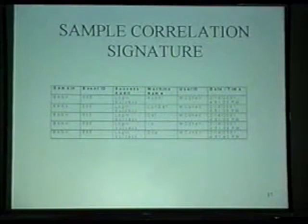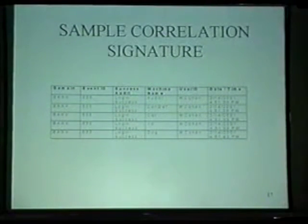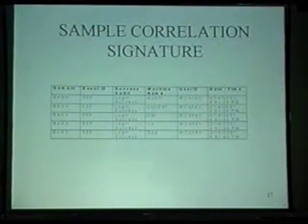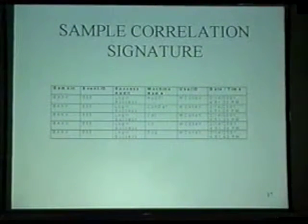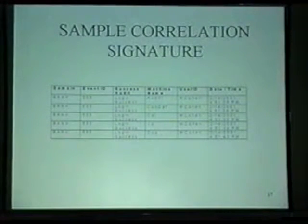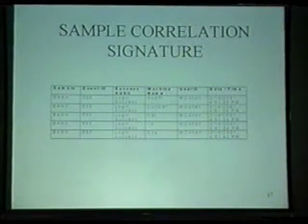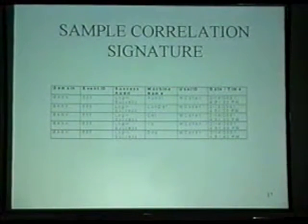This is a sample event correlation signature where you have to look at different boxes. With BindView you can audit the entire enterprise from one workstation. This shows a login success event 539 - the same person logging in from different machines at similar times. He can't be in different geographical locations at the same time, so it definitely puts up a red flag.